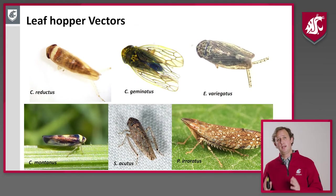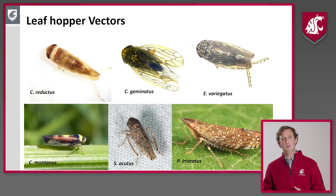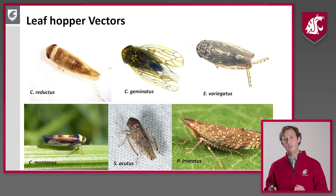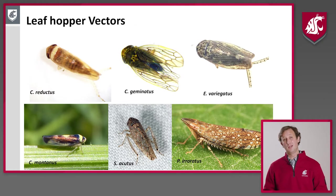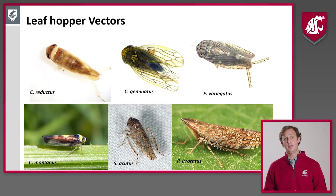I'm going to be talking about X disease phytoplasma and the leafhoppers today. There are a number of leafhoppers able to transmit the X disease phytoplasma. Colladonus reductus and Colladonus geminatus are the two main ones here — the most abundant — but there are a few others that can also transmit the phytoplasma.